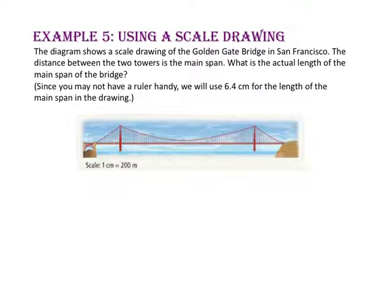In example 5, we will use a scale drawing. The diagram shows a scale drawing of the Golden Gate Bridge in San Francisco. The distance between the two towers is the main span. What is the actual length of the main span of the bridge? Since we may not have a ruler handy, we're going to use 6.4 centimeters for the length of the main span in our drawing. Let's begin by writing a ratio using our scale, 1 centimeter to 200 meters.